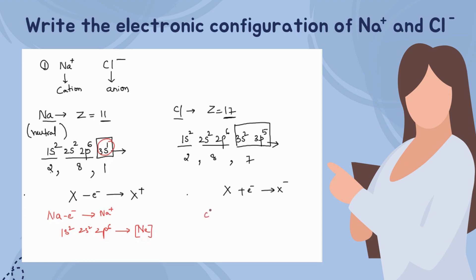For chlorine, we add an electron to convert it into the negatively charged Cl⁻ ion. The configuration becomes 1s² 2s² 2p⁶ 3s² 3p⁶. This is the argon configuration, another inert gas configuration. So Na⁺ and Cl⁻ ions, by releasing and gaining electrons respectively, achieve an inert gas configuration and become stable.